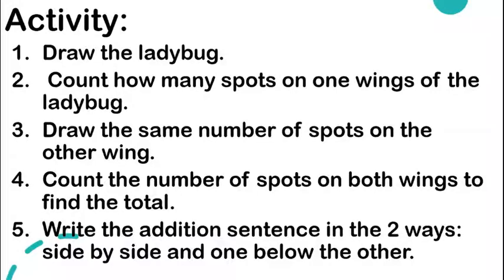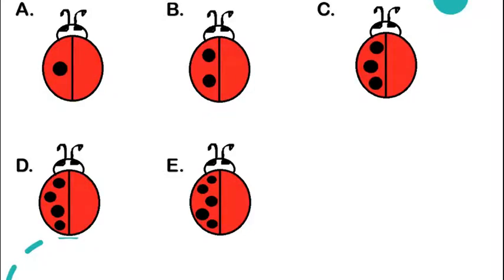Let's proceed with our activity. The first thing you need to do is draw the ladybug. Second, count how many spots are on one wing of the ladybug. Third, draw the same number of spots on the other wing. Fourth, count the number of spots on both wings to find the total. Fifth, write the addition sentence in two ways — side by side, which is the horizontal addition sentence, and one below the other, which is the vertical addition sentence.